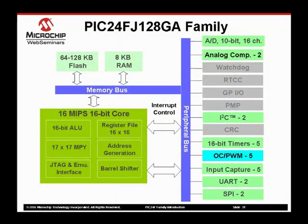In association with the 16-bit timers, Microchip includes several channels of output compare PWM on each device. The PIC24FJ128GA family used in our block diagram contains five channels of output compare PWM. The output compare modules can be used to generate single pulses, multiple pulses, and variable pulse chains. The output compares are very useful in lighting, motor control, and even voice reproduction applications.